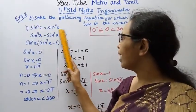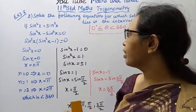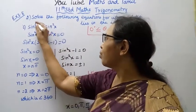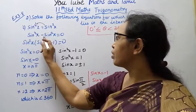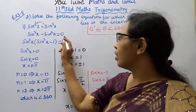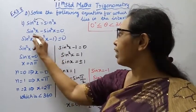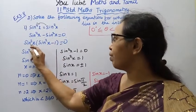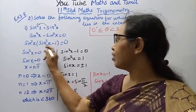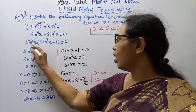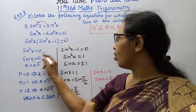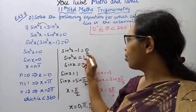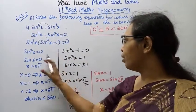sin⁴x = sin²x. Left-hand side: sin⁴x - sin²x = 0. Taking sin²x common: sin²x(sin²x - 1) = 0. So sin²x = 0 or sin²x - 1 = 0.